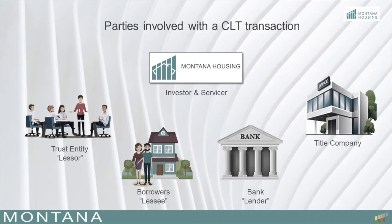The lender qualifies the borrower for the initial loan. The title company is the third-party entity that closes the transaction and ensures the recording of the documents. And finally, there is the investor, such as Montana Housing, who purchases the loan from the lender in the secondary market.